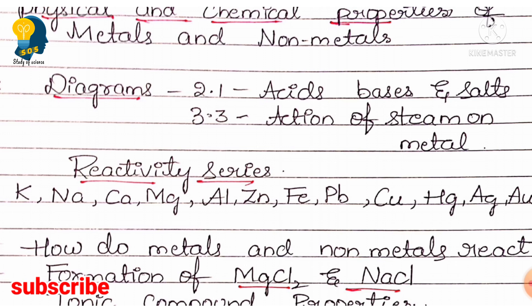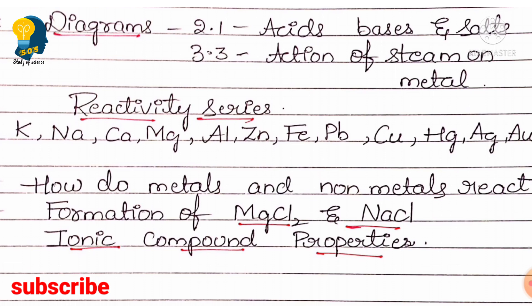You also need to know the reactivity series — which metal is most reactive and which is least reactive. I have posted a video on how to remember the elements in order — check that on my channel. Next, know how metals and non-metals react with each other to form ionic compounds. This is discussed on pages 46 and 47 of your textbook.